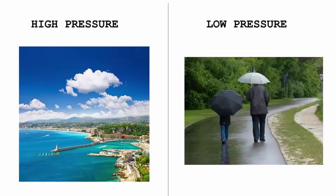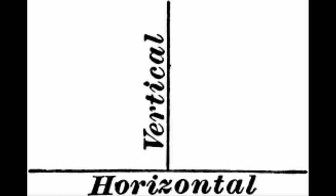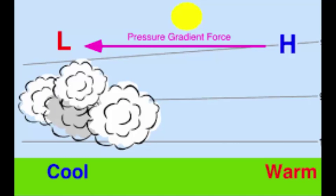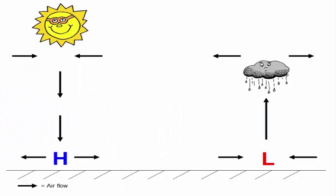I need you to understand this — high pressure is generally associated with nice weather, while low pressure is generally associated with cloudy, rainy, or snowy weather. In order to understand the types of weather conditions generally associated with high and low pressure systems, we must think vertically. The movement of air in the atmosphere above our heads plays a large part in the weather we experience here at Earth's surface.